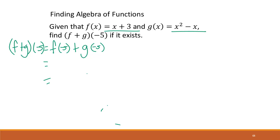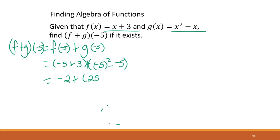So we have negative 5 plus 3, plus negative 5 squared minus negative 5. Negative 5 plus 3 gives negative 2. Negative 5 squared is 25 because the negative is included, and then minus a negative gives plus 5. So we have negative 2 plus 30, giving us positive 28 as our solution.